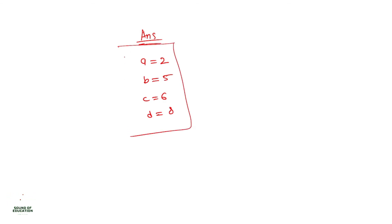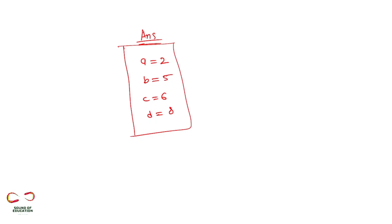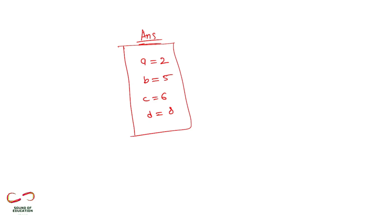This is the final answer. This is how you use the Thomas Algorithm method. A similar step-by-step procedure can be applied to any numerical, whether equations are given directly or in matrix form. I hope this method is clear. Please practice a few more numericals. If you have comments or suggestions, please leave them below. Thank you for this session.